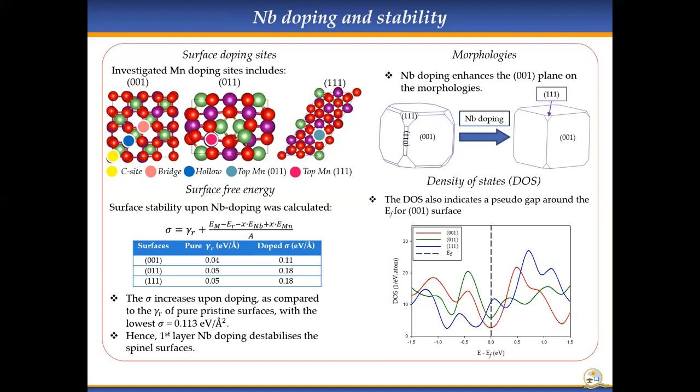We checked the density of states. From the density of states we observed a sort of pseudo gap at the 001. When checking the stability trend, we can clearly see that the surface stability follows with 001 as the most stable surface, followed by the 011 and 111 surfaces. This is after doping, and as we can see, doping on the top layers of lithium manganese oxide doesn't really affect the stability trend of the surfaces, only destabilizes the individual surfaces.